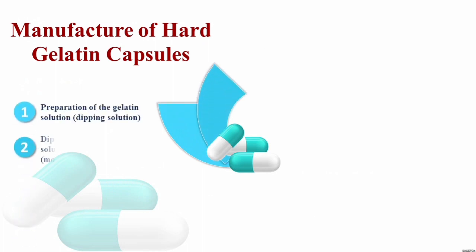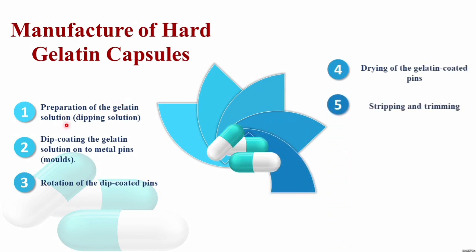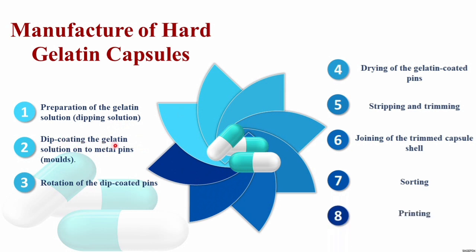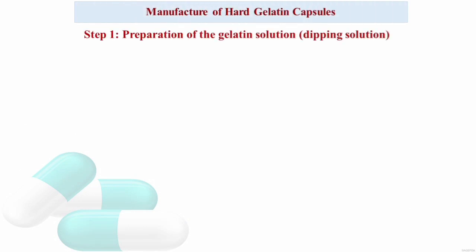Manufacturing of the hard gelatin capsule involves several steps: first, formation of the dipping or gelatin solution; second, dip coating of the gelatin solution on metal pins or molds; third, rotation of the dip-coated pins; fourth, drying of the gelatin-coated pins; fifth, stripping and trimming; sixth, joining of the trimmed capsule shells; seventh, sorting; and finally, printing of the capsules before filling.